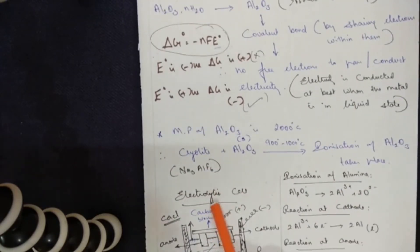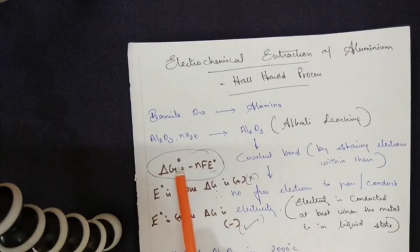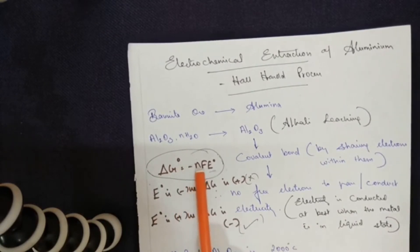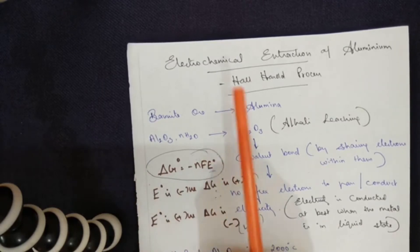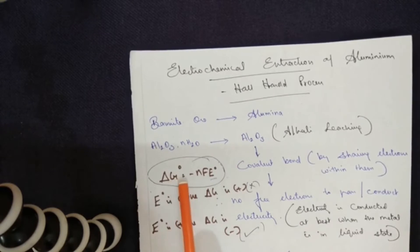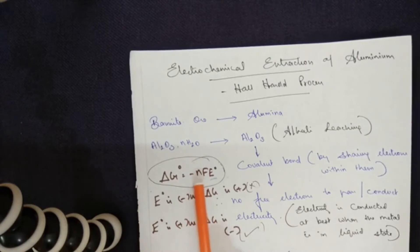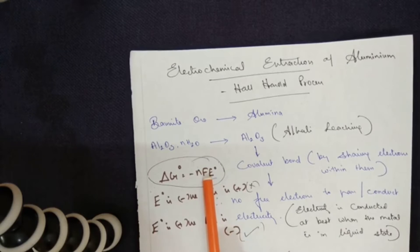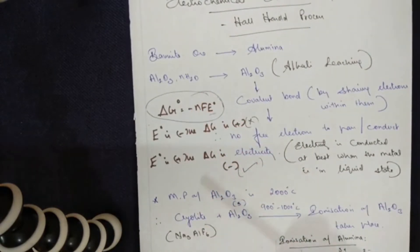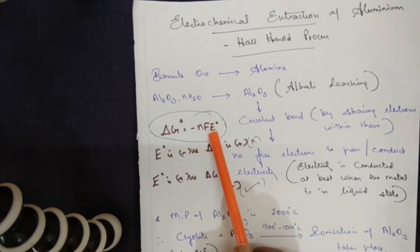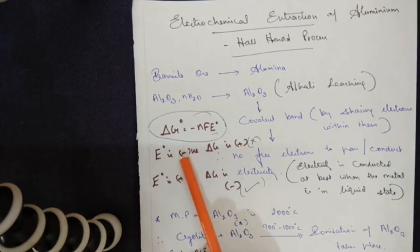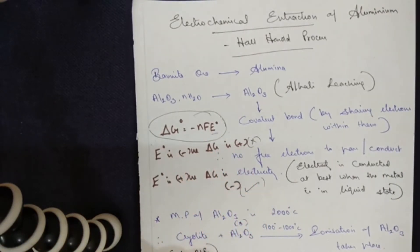Before we move into the electrolytic cell, let's have a quick recap. The electrochemical principle is based on the formula: ΔG⁰ = −nFE⁰. ΔG⁰ represents standard Gibbs free energy — the energy available to do useful work. The minus sign indicates work is being done. N is the number of electrons involved in the reduction, F is Faraday's constant (the quantity of electricity passed for electrolysis), and E⁰ is the electrode potential.